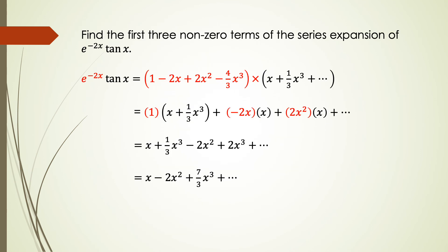Find the first 3 non-zero terms of the series expansion of e^(−2x) multiplied by tan(x). We just multiply the expansion of e^(−2x) and the expansion of tan(x), solving up to x³. After carrying out the working solution, we get the expansion of e^(−2x) times tan(x) equal to x minus 2x² plus 7 over 3 x³ and keep going to higher powers of x.